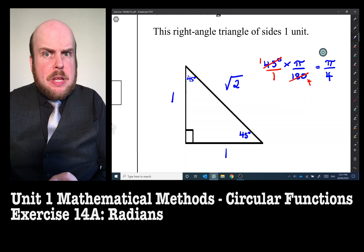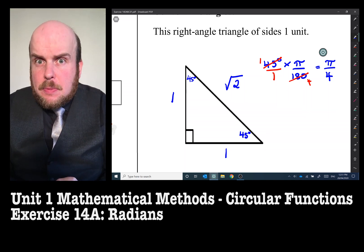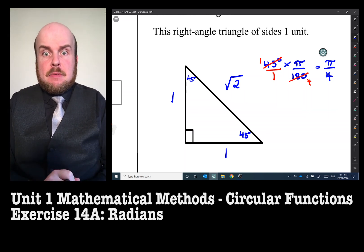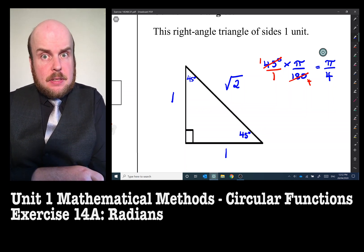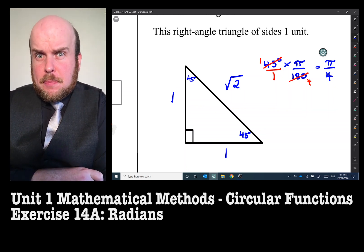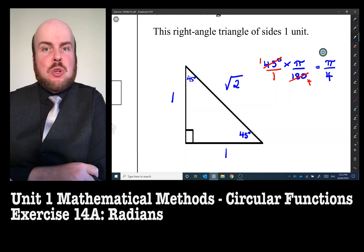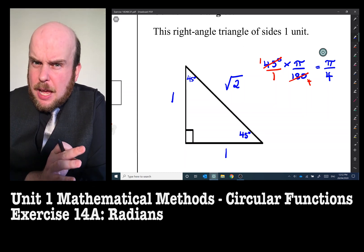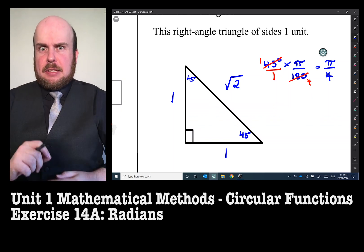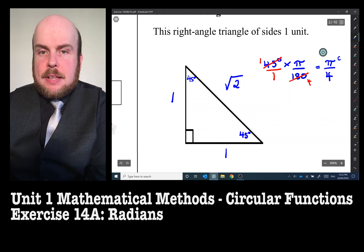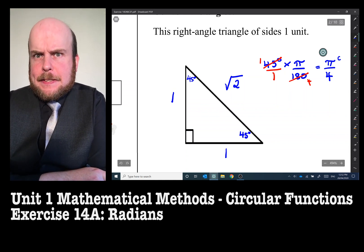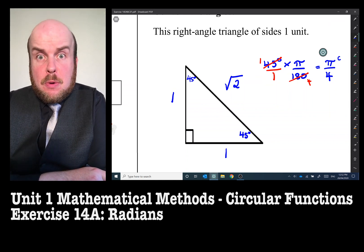Now when we usually write radians, we don't necessarily keep the units of measurement. We don't necessarily have a little symbol like we do with degrees. Often we just assume that if there's a π involved it is quite likely to be a radian. However, if you like to be ultra careful, you put a little c at the top there, and that is radians.